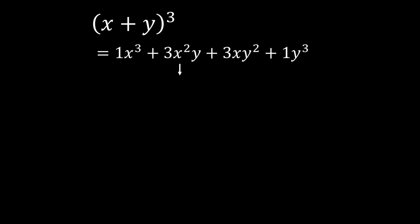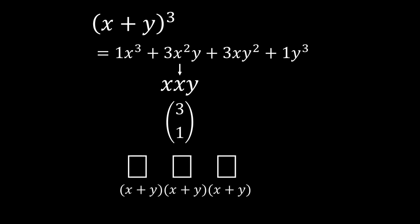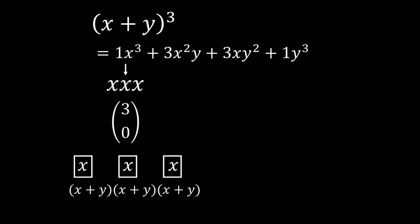So in the case of x squared y, to count the number of arrangements of two x's and one y, we do three choose one. Why? Well, we must first choose one out of the three brackets to be a y. And after we have chosen the bracket with the y, we can let the other positions be filled with x's. Here, the number of ways to select one bracket out of three to be a y is three choose one. So by using the same logic, we can find the coefficients of other terms using combinations.